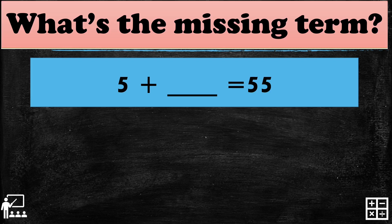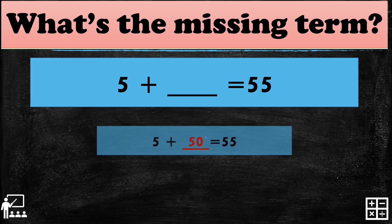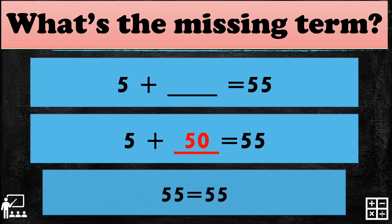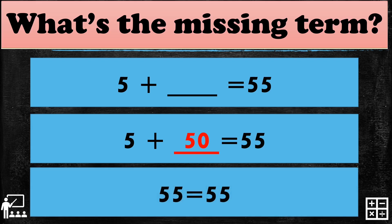Can you guess what number we need to add to 5 to also get 55? That's right, it's 50. If you add 5 plus 50, it will give you 55, and this equation is equal.